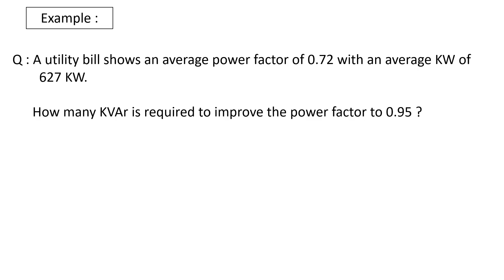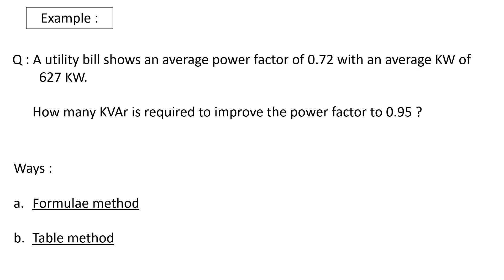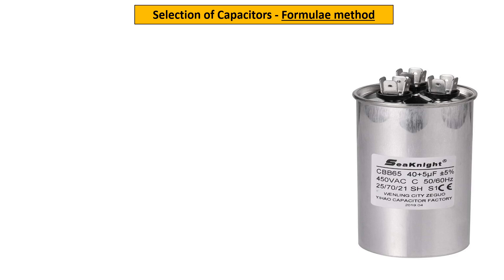Now let's jump to an example for fast understanding. We have a load and a present power factor, and we need to calculate the kVAR required for maintaining power factor to 0.95. We have two different methods and we will look into both. Let's see the first — the formula method.